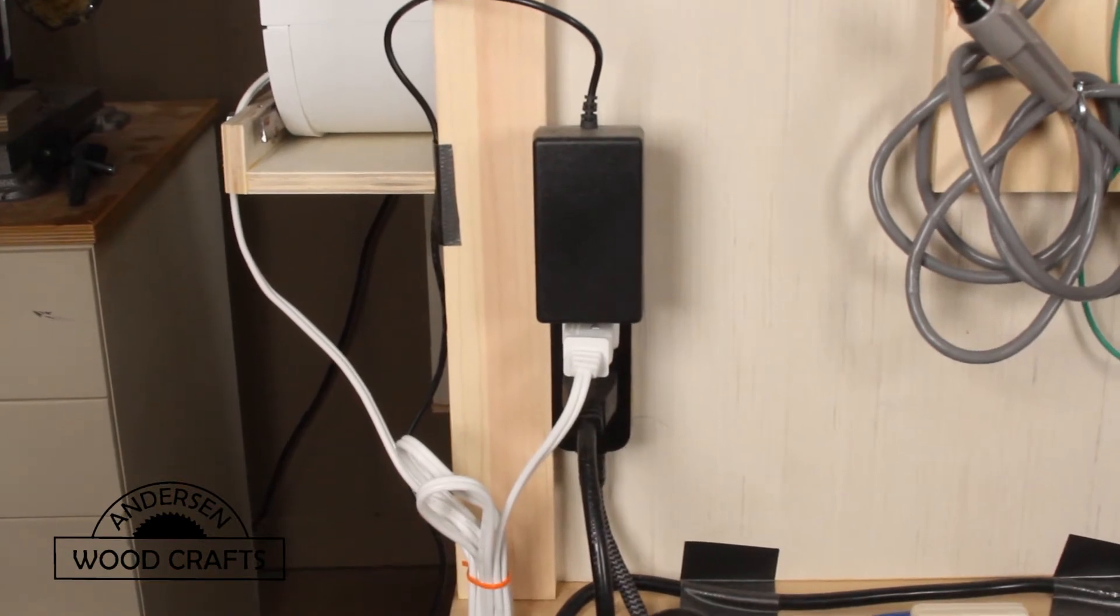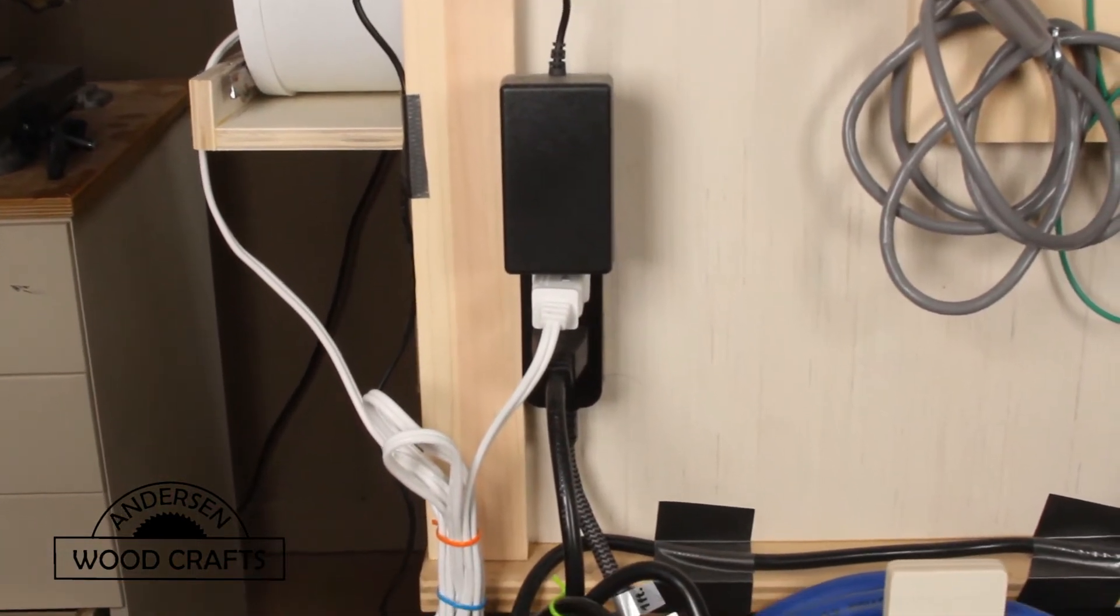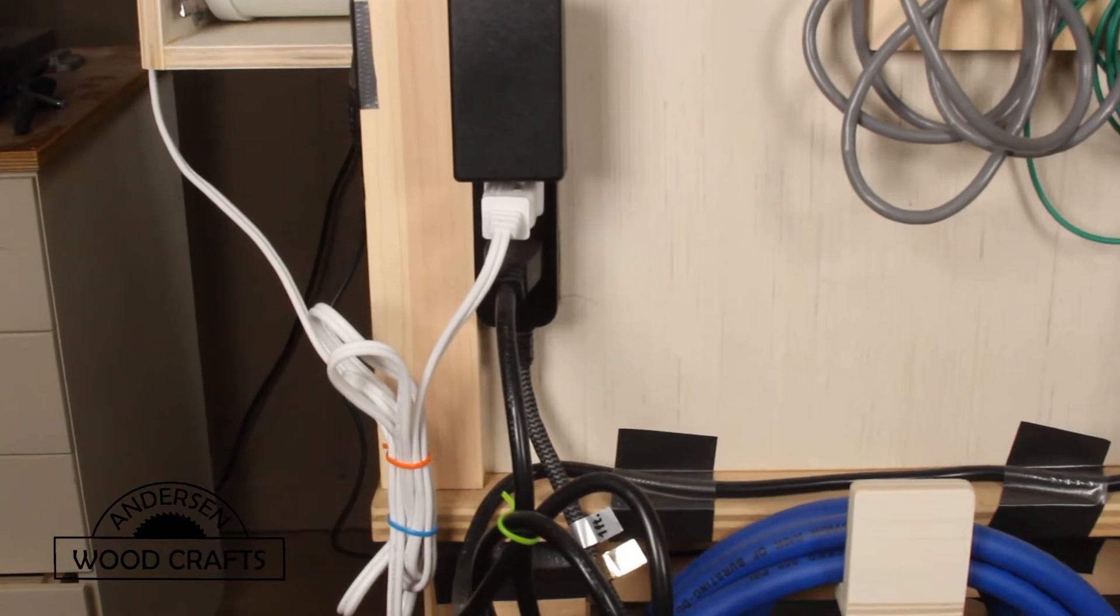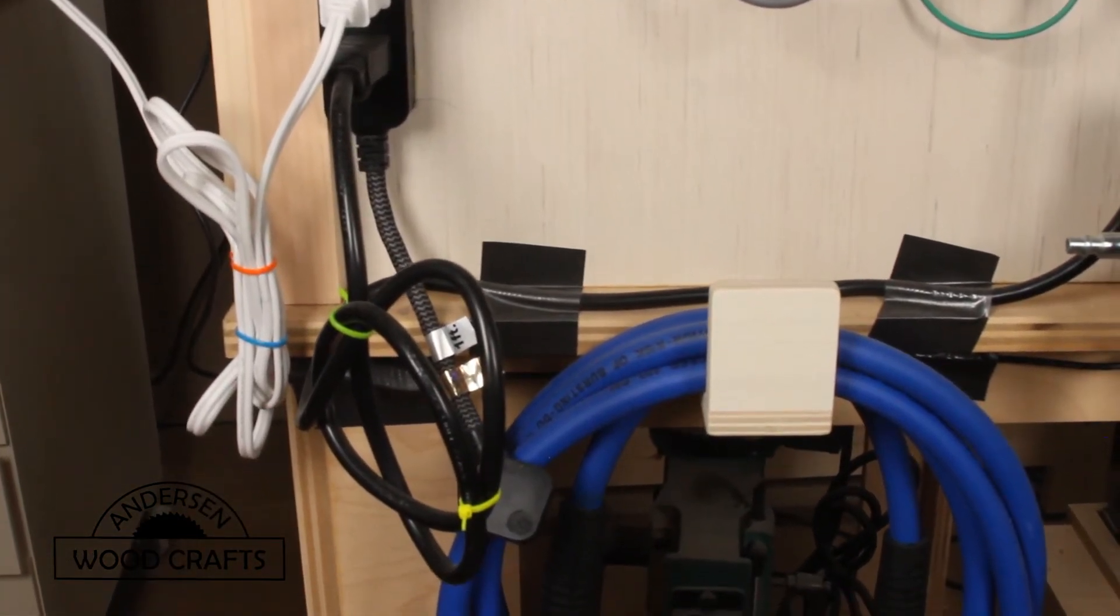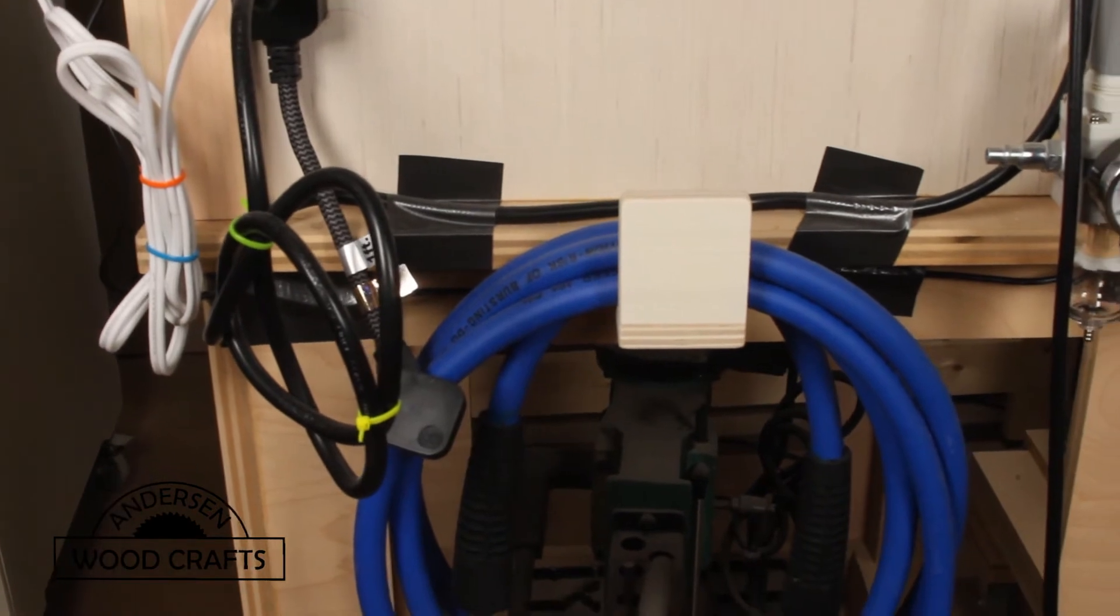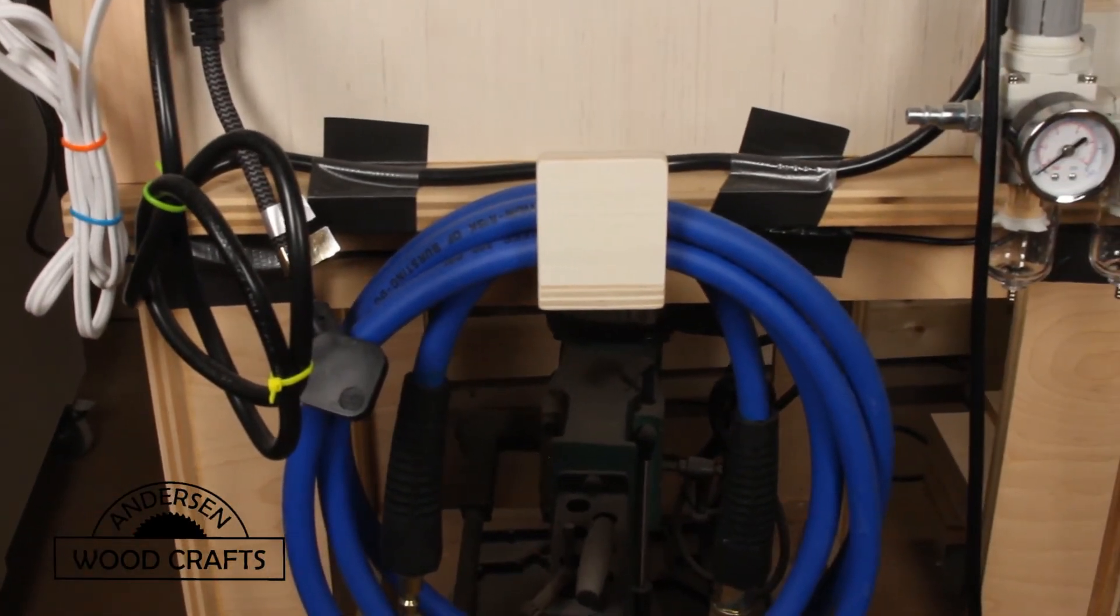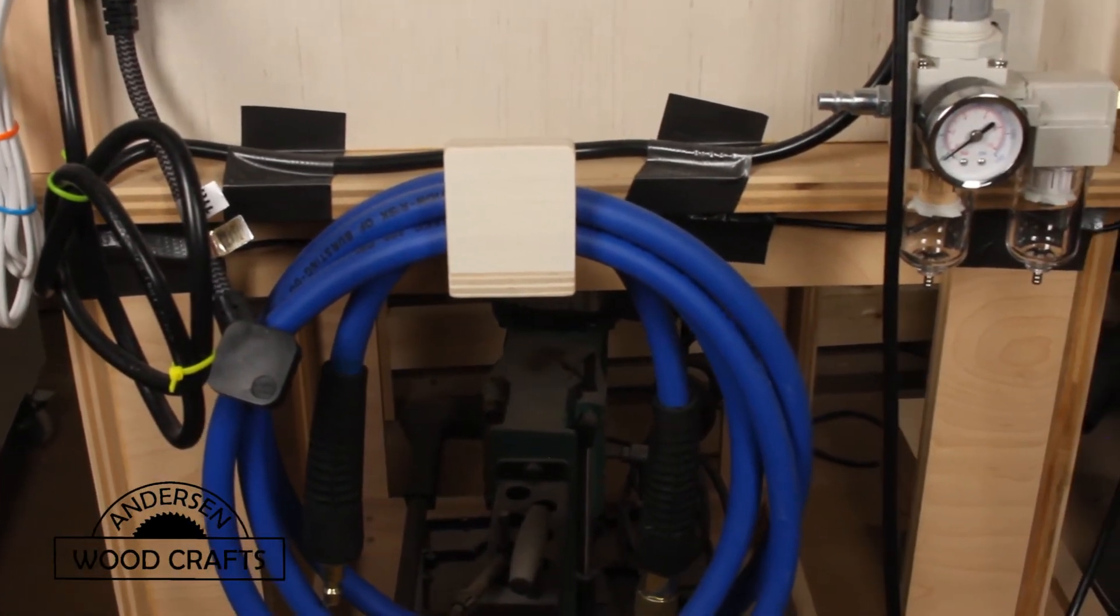Now here's a rundown on the side of the booth with everything attached. First is the power strip with the items all plugged in, and that way I only have to plug in one item. And then I made a little bracket to hang the air hose.